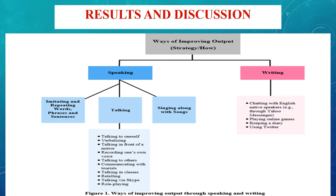Some improved fluency by talking either to themselves or to others, loud or quiet. These speeches revolved around certain topics or simply daily events. Other forms of talking and practicing proposed by learners were: talking to oneself, verbalizing, talking in front of a mirror, recording one's voice, talking to others, communicating with tourists, talking in classes, retelling, talking via Skype, or even role-playing.